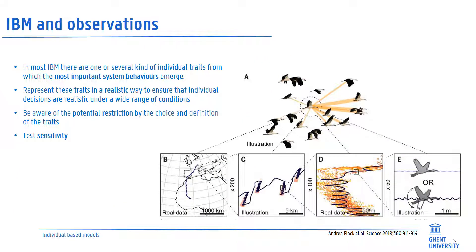Traits are central to individual-based models. In most IBMs, there are one or several kinds of individual traits from which the most important system behaviors emerge. We need to represent these traits in a realistic way to ensure that individual decisions are realistic under a wide range of conditions. Be aware of the potential restriction by the choice and definition of traits, and always test sensitivity to factors that are unknown and not modeled. A nice example is flocking behavior of migrating white storks: while mechanistic movement rules like speed and gliding time are important to simulate individual movement, group dynamics can only be simulated by adding leader and follower dynamics.